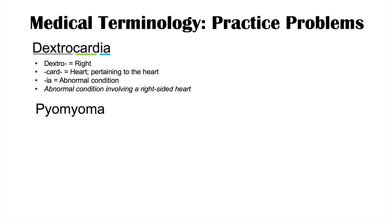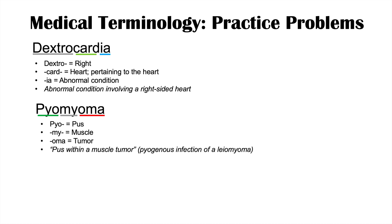The next word is pyomyoma. If we break that word down, the prefix pyo means pus, myo refers to muscle, and the suffix oma means tumor. So it's pus within a muscle tumor — it's actually a pyogenous infection of a leiomyoma, and it's a very rare condition.